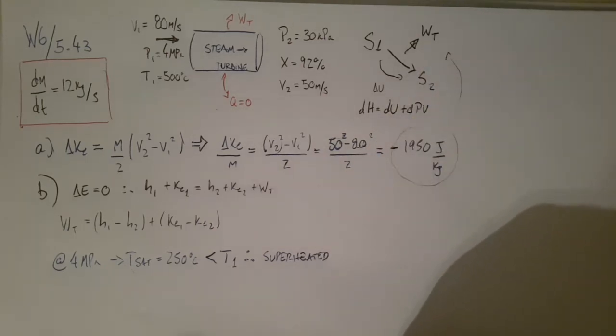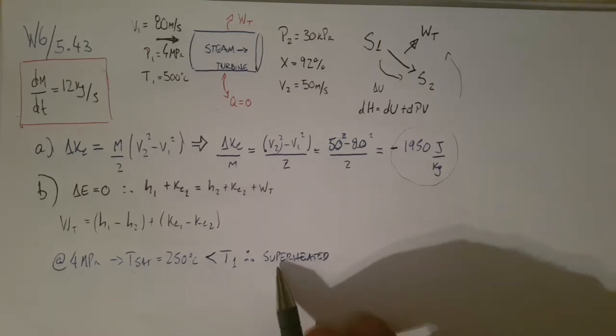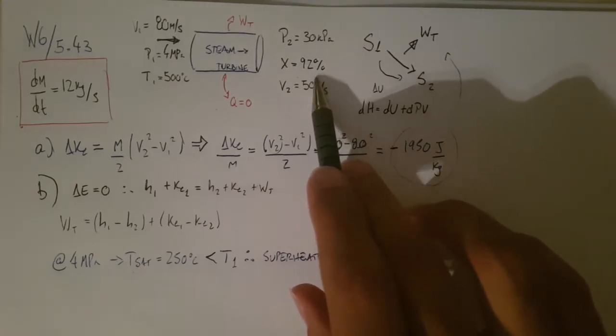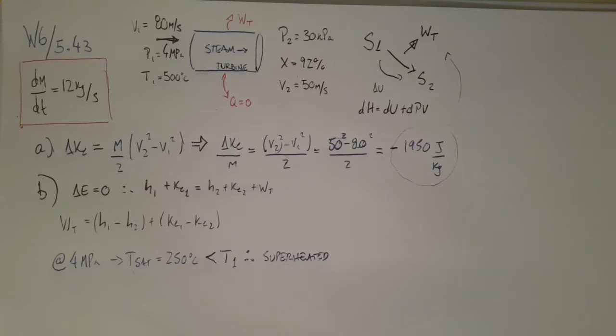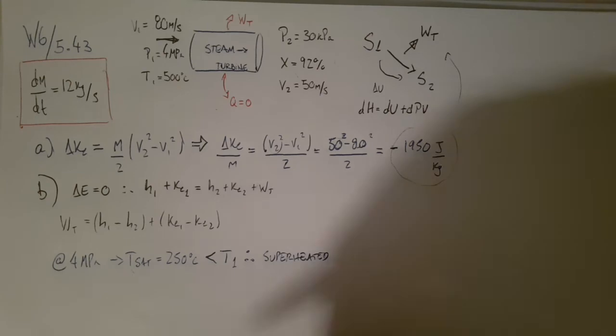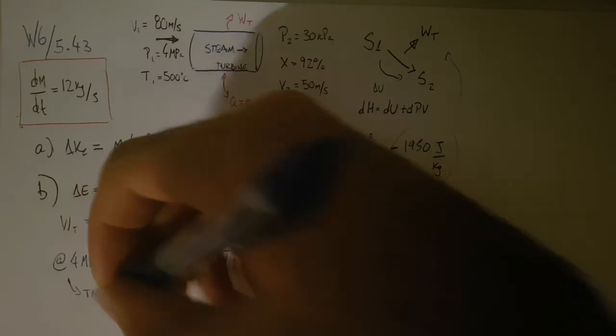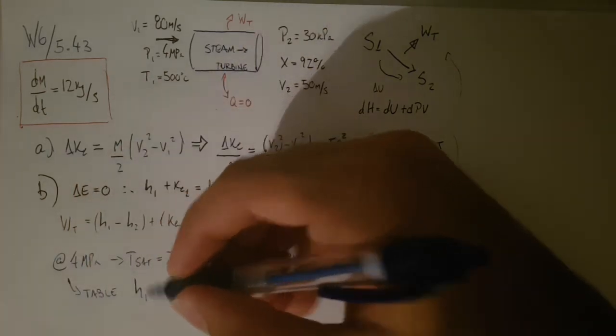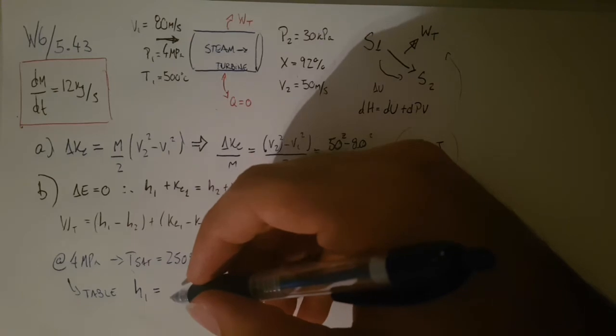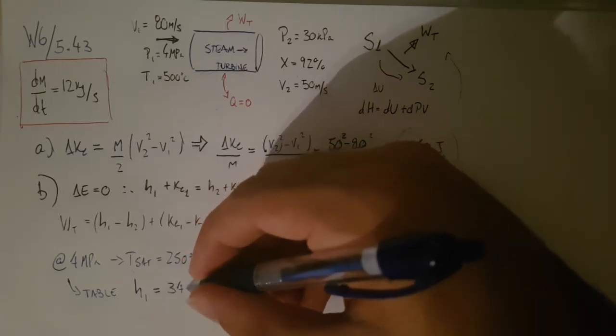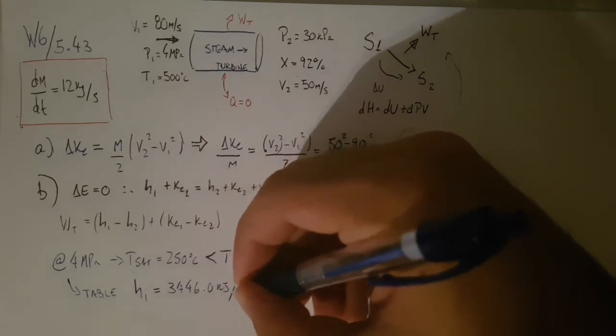So we go to the superheated table instead of the mixed table. And on the second one, we already know it's a mixture because it gives us the quality, right? So we know it's 92% vapor and 8% liquid, so we know we're going to be looking at the mixture table. Okay, so my H1, straight from this table here, straight from this table, from the superheated table, I'll grab my H1. Which is at 4 megapascals and 500°C, and that's going to be table A6.